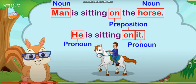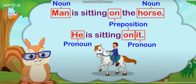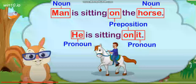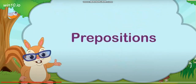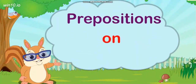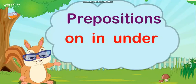Like in the first sentence, you can see the sentence says 'man is sitting on the horse.' It is answering the question: where is the man sitting? He is sitting on the horse. It makes a connection between the noun 'man' and another noun 'horse.' In the next sentence, 'he is sitting on it' — here the pronoun 'he' is connected with another pronoun 'it' with the help of preposition 'on.' Some examples of prepositions are: on, in, under, and over.